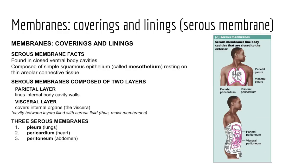Serous membranes are moist membranes found in the closed ventral cavity. There are three serous membranes: the pleural membrane lining the thoracic wall and covering the lungs; the pericardial membrane enclosing the heart; and the peritoneal membrane enclosing the abdominopelvic region. These membranes are double-layered, with a visceral layer covering the organs and a parietal layer lining the body cavity, with serous fluid between the layers acting as a lubricant to reduce friction during organ movement.